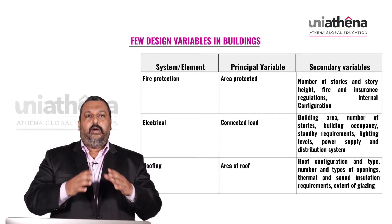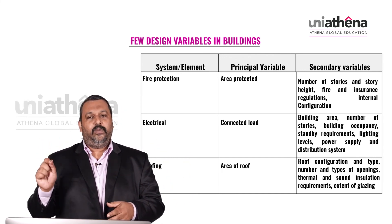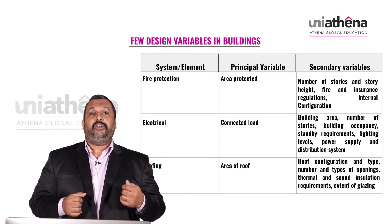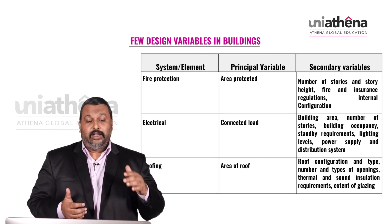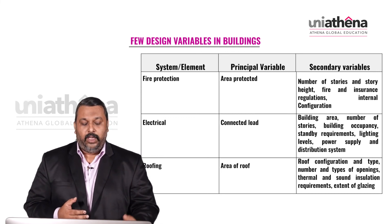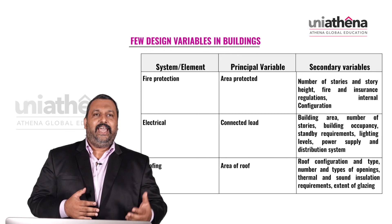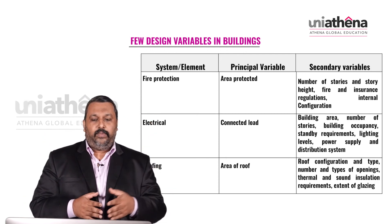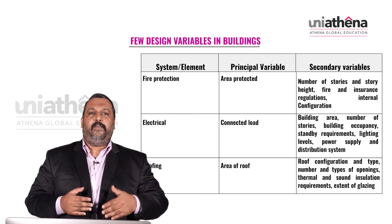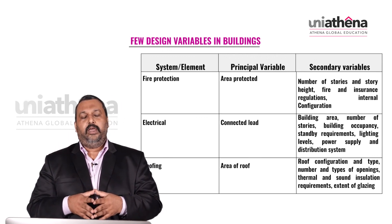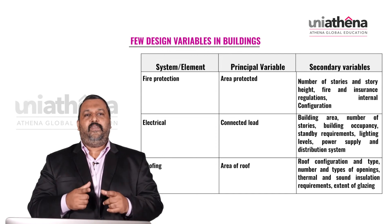For roofing as a system, the principal variable is the area of the roof. Secondary variables are roof configuration and type, type of openings required, thermal and sound insulation requirements, and extent of glazing. As we discuss each system as an element, we see common secondary variables like building area, number of stories, and occupancy, but the principal variables differ for each element. While designing a building, if you want to keep costs to a minimum, you need to use strategies that optimize these design variables.